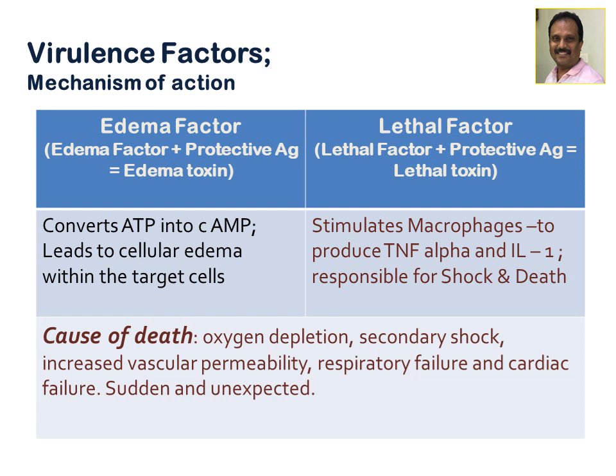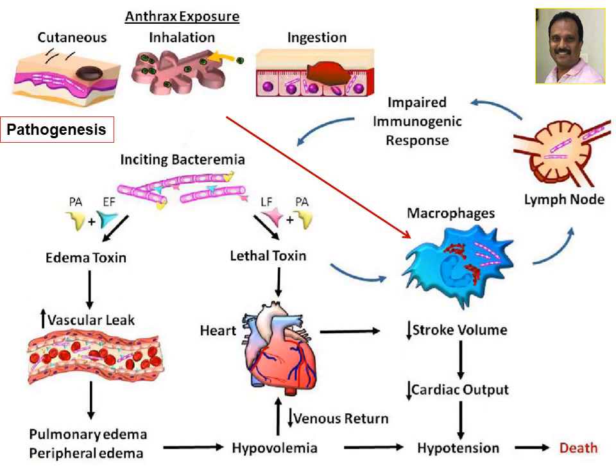Causes of death in anthrax infection include oxygen depletion by toxin effects, secondary shock, increased vascular permeability, respiratory failure, and cardiac failure — with sudden unexpected death possible. In the pathogenesis, anthrax spores enter the body either through the cutaneous route (abrasions or inoculation into the skin), by inhalation of spores, or by ingestion of spores.